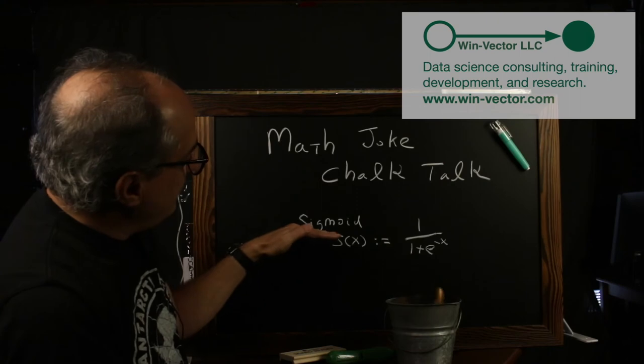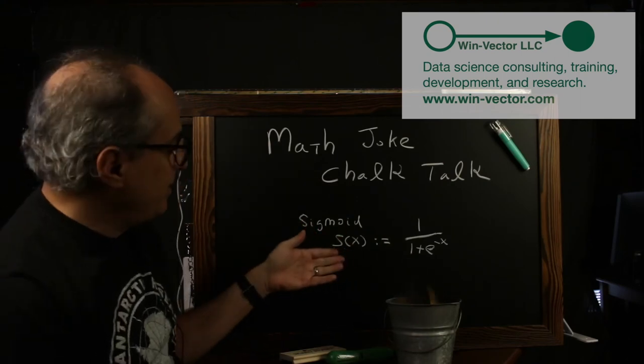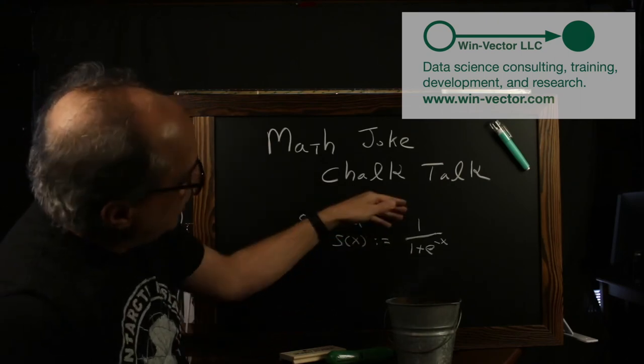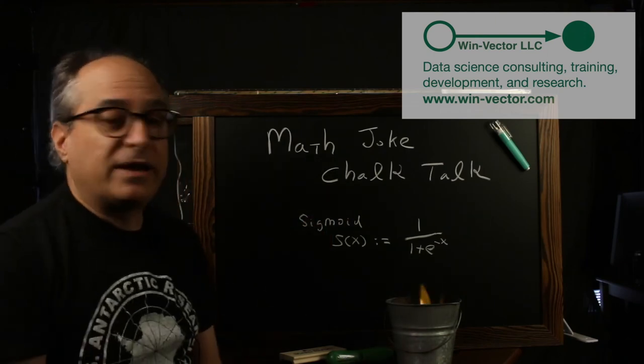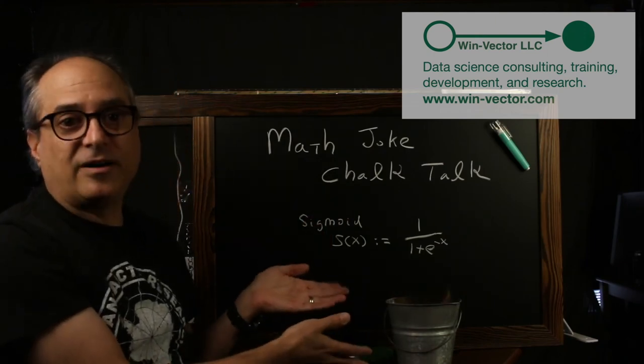Back to explaining how the sigmoid, a function used a lot in machine learning, is defined as sigmoid of x is 1 over quantity 1 plus e to the minus x. Because to their mind, this is solved.